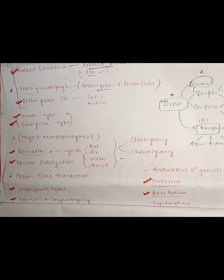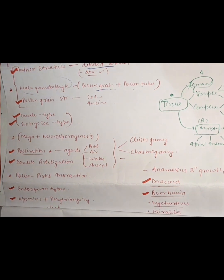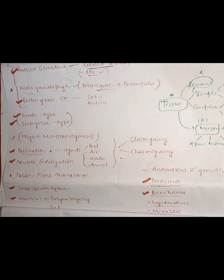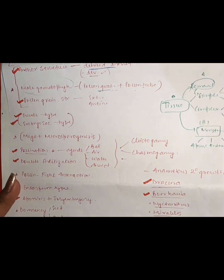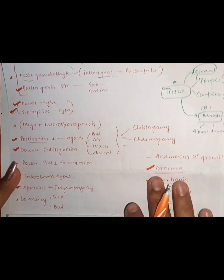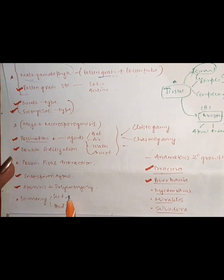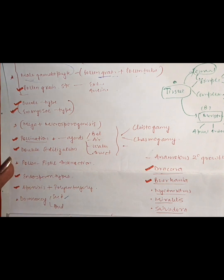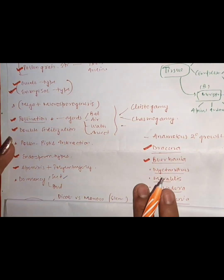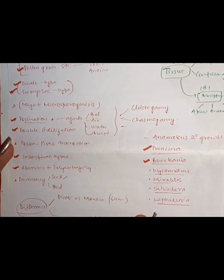Then we have the most important topic — apomixis and polyembryony. You should know what apomixis and polyembryony are. Then we have dormancy. Seed dormancy is often asked in exams. You should know what dormancy is and what types it has — seed dormancy and bud dormancy.